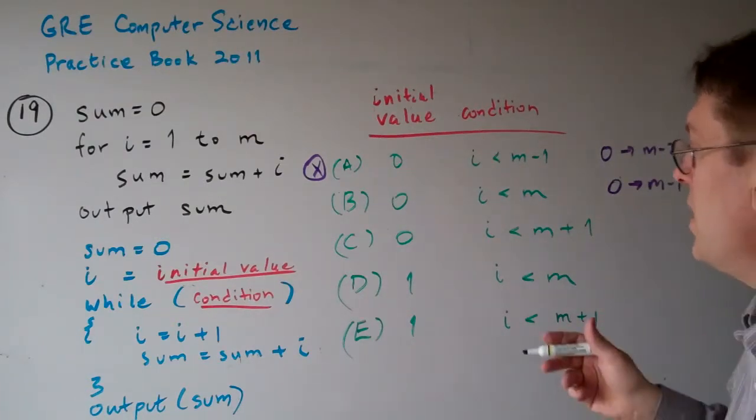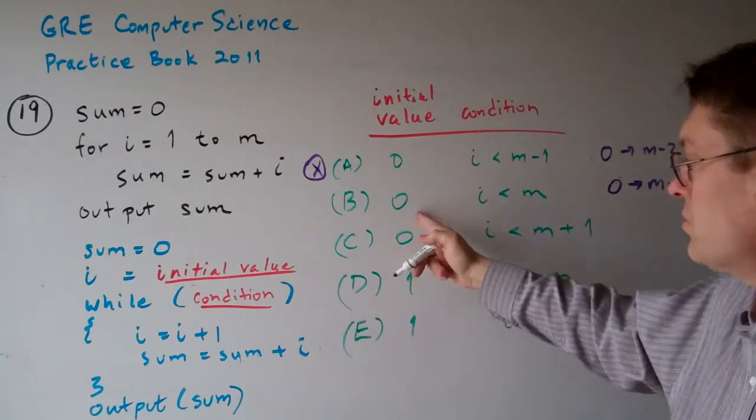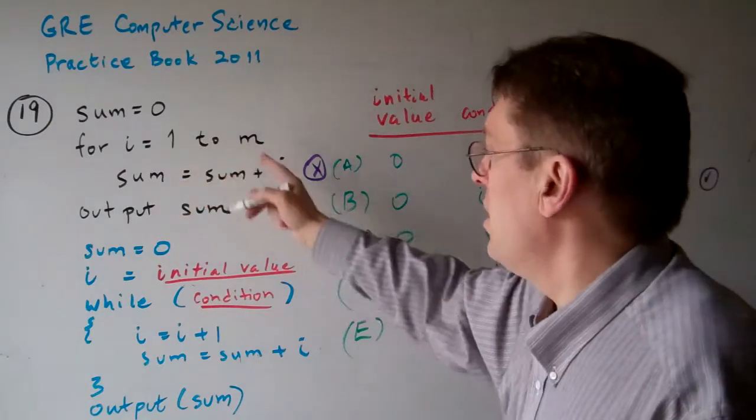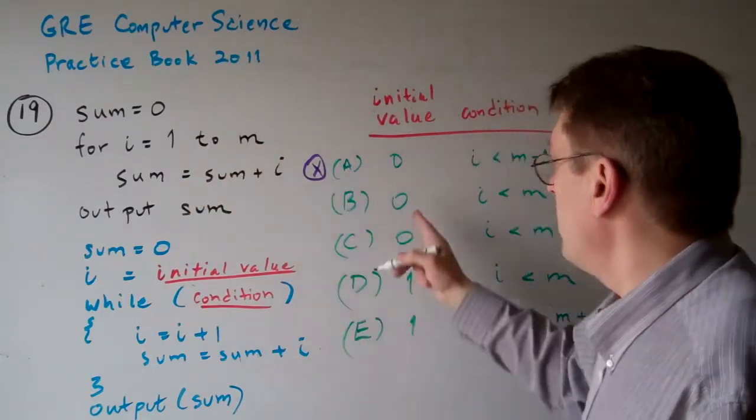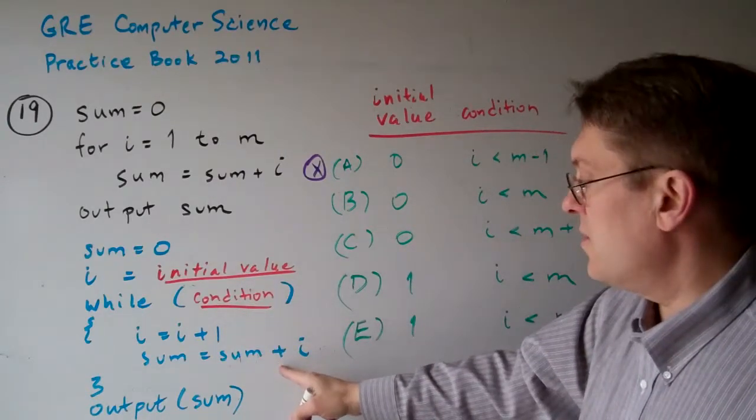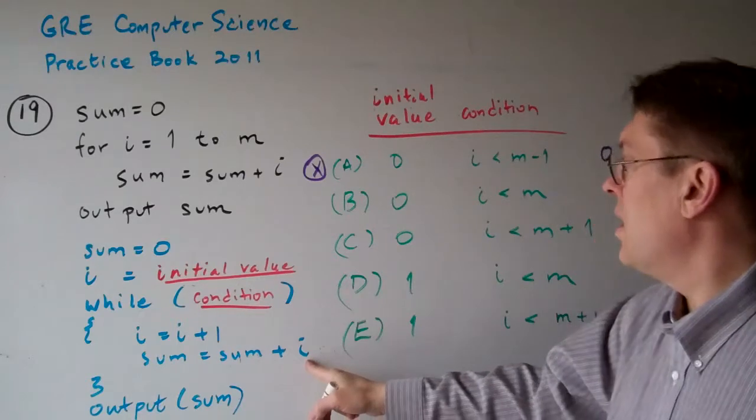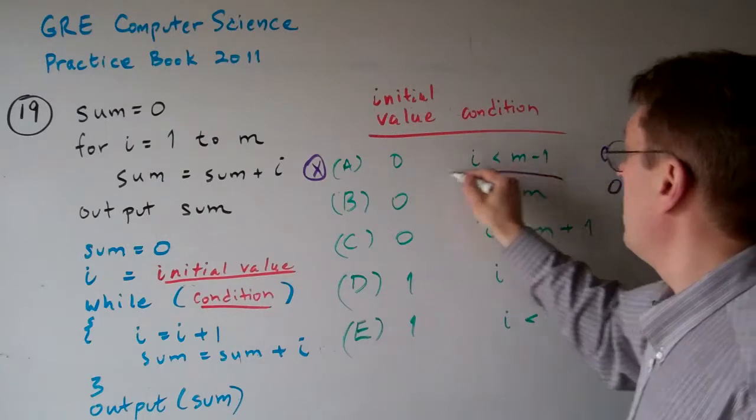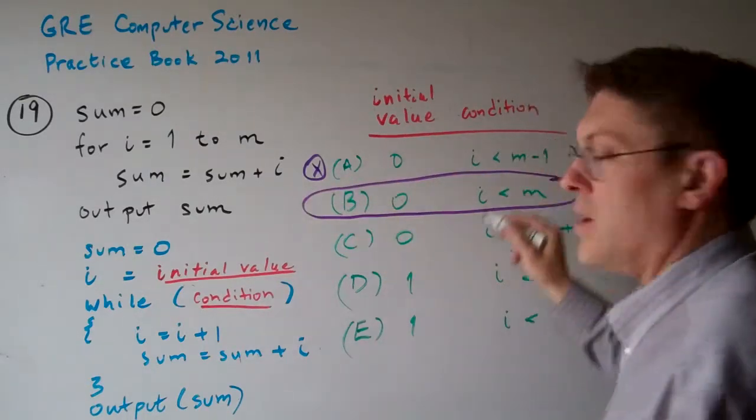The question is, would the sum be correct? We've got to start from 1 to m. If we start off at 0, what happens is i gets i plus 1, so the sum gets sum plus i. So i is 1. And it loops the correct number of times. So this one looks like it's the correct answer.